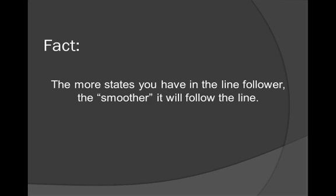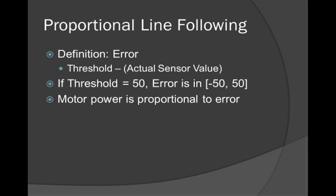How many states can we have? It turns out that there's a way with math to make it so that you have as many states for your line follower as there are possible light sensor readings, and you don't have to put an if statement in for every possible state. So that's even better. And this leads us to something called proportional line following.